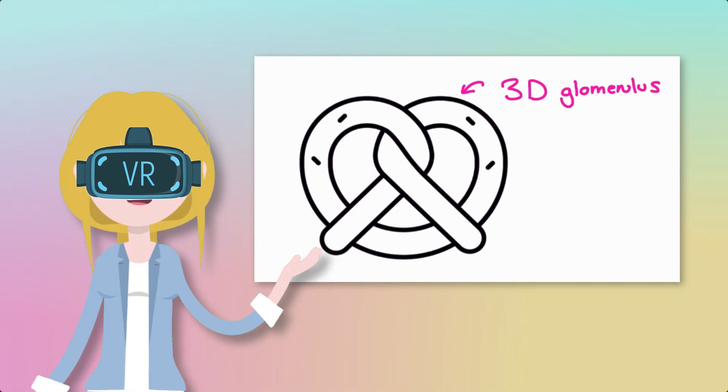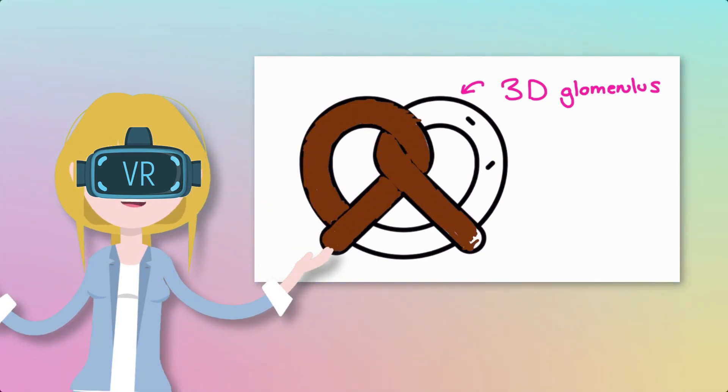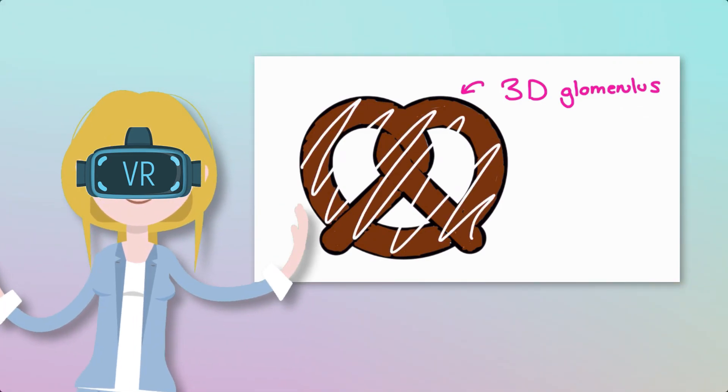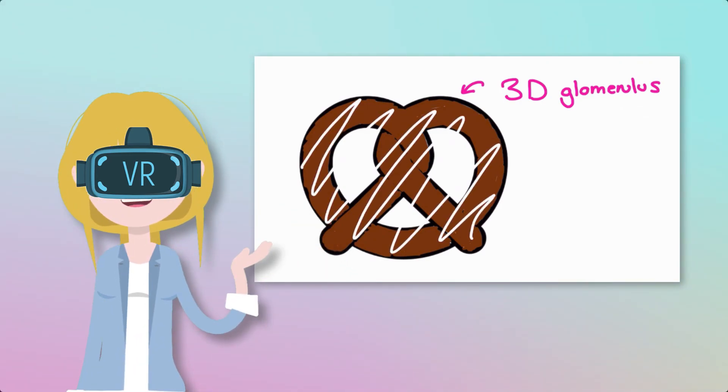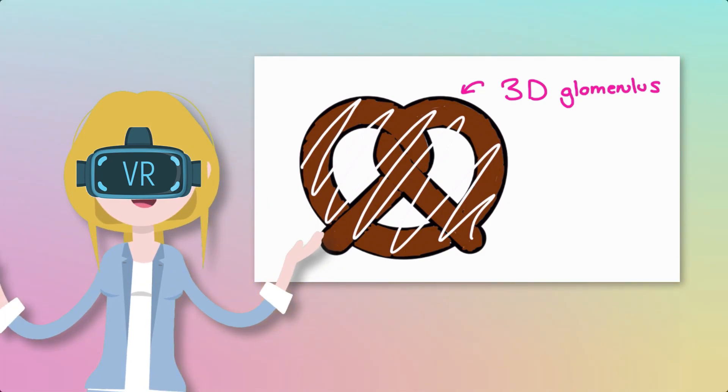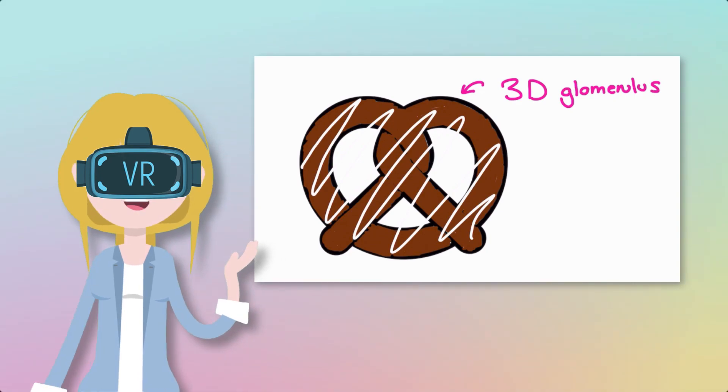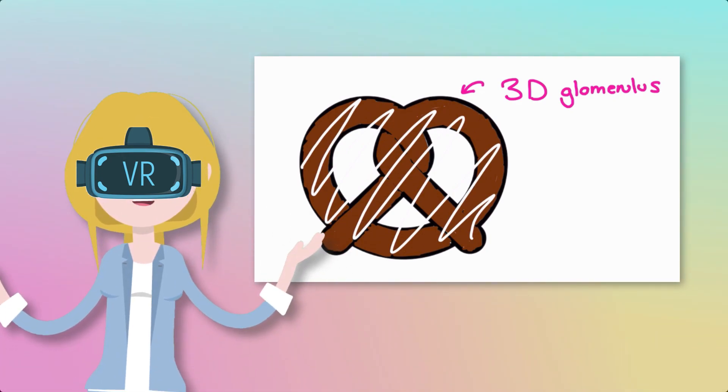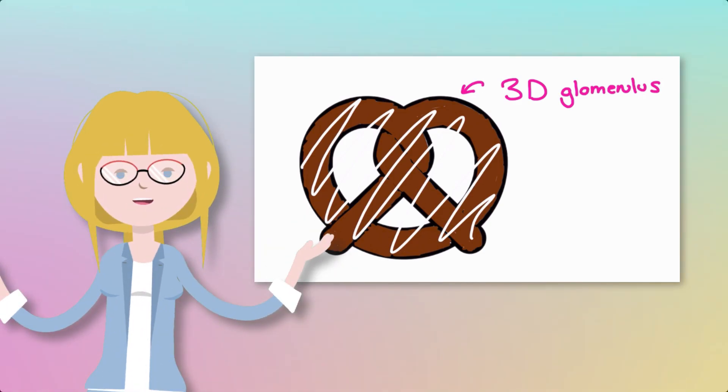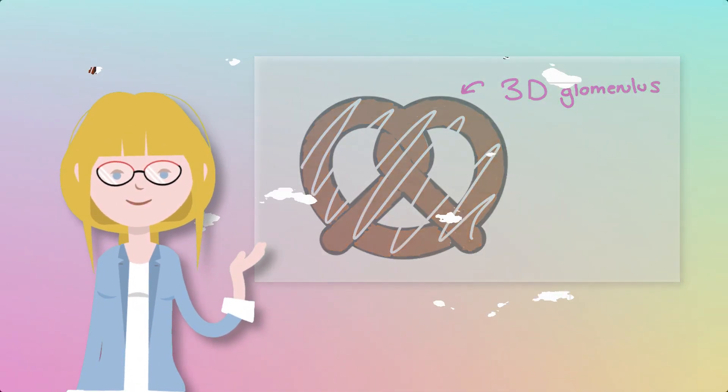Take a plain pretzel, that's the capillaries. Now we add some chocolate, that's the glomerular basement membrane. And then we add some icing and suddenly we have the podocytes. In between this pretzel structure there is supporting tissue known as the mesangium. Think of placing this pretzel onto a sponge cake, there's your mesangium. So that's the glomerulus in 3D.